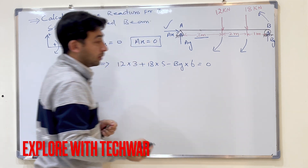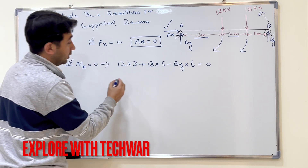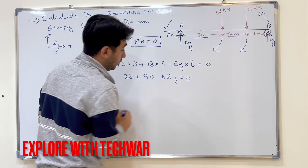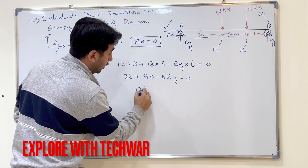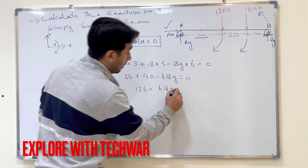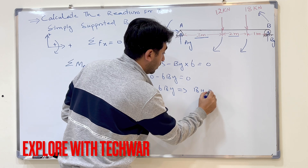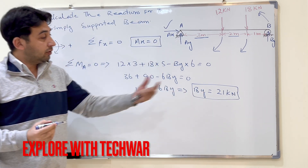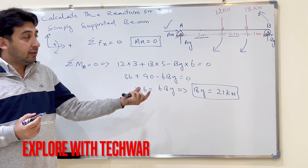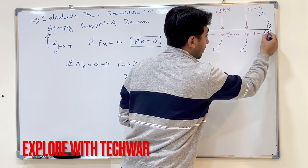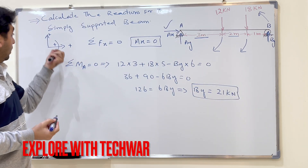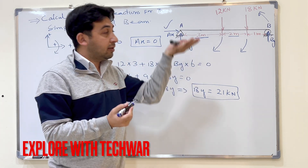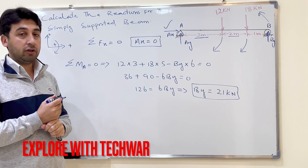Setting the equation equal to zero: 36 plus 90 minus 6·BY equals zero, giving 126 equals 6·BY, so BY equals 21 kilonewtons. The positive sign confirms our assumed direction was correct — BY acts upward. This is the reaction at the roller support at point B.